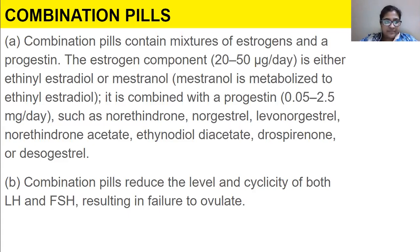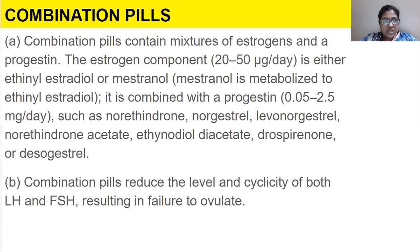Combination pills contain a mixture of estrogen and progestin. The estrogen component, at 20 to 50 micrograms per day, is either ethinyl estradiol or mestranol. Mestranol is metabolized to ethinyl estradiol. It is combined with progestin at 0.05 to 2.5 mg per day, such as norethindrone, norgestrel, norethindrone acetate, ethynodiol diacetate, drospirenone, or desogestrel.